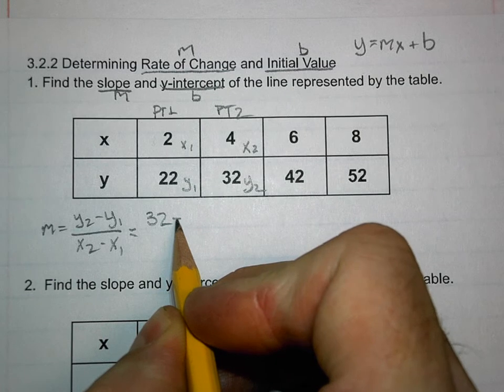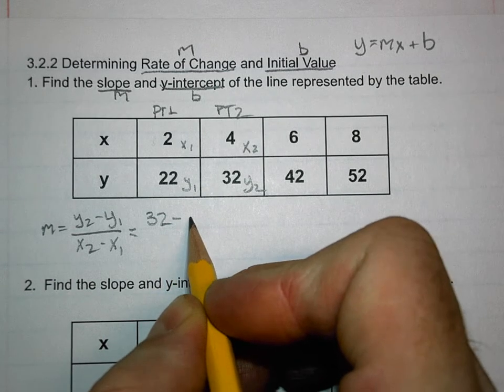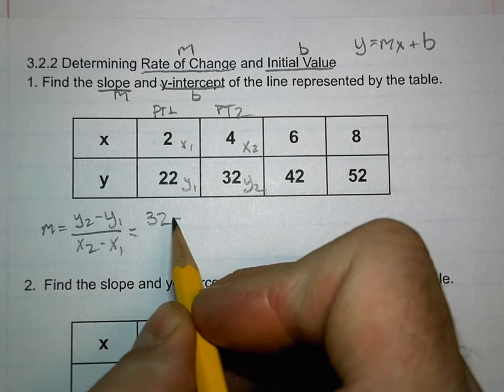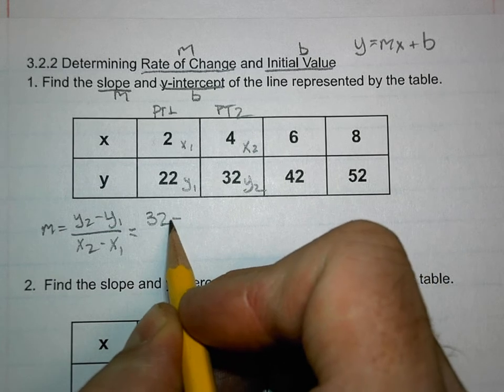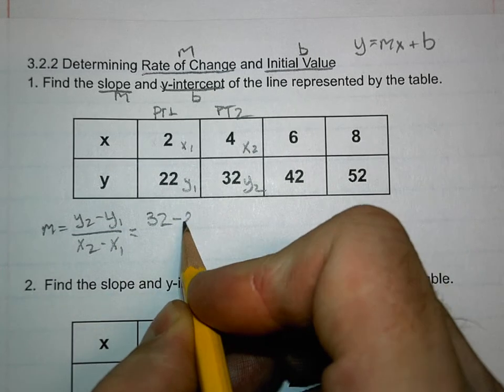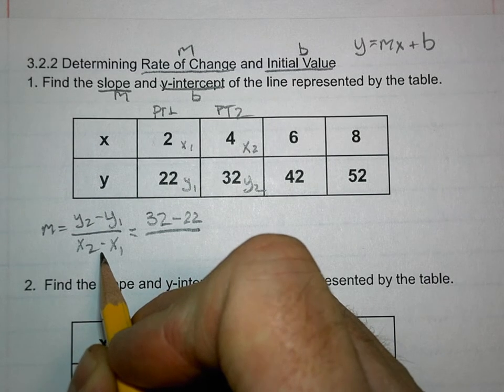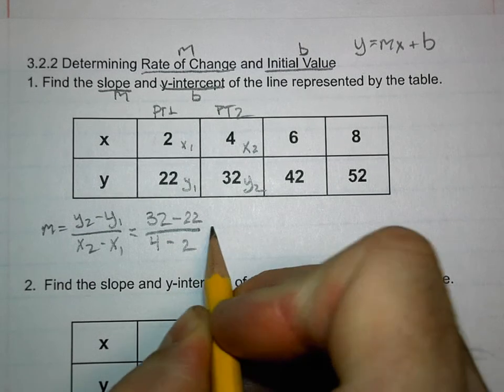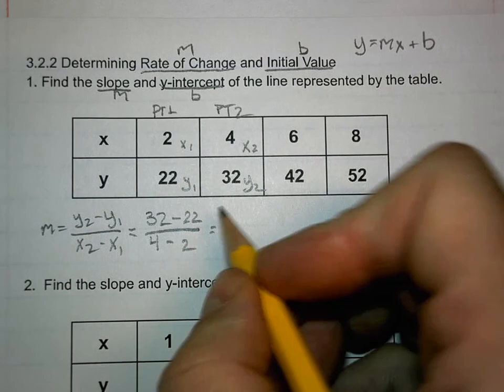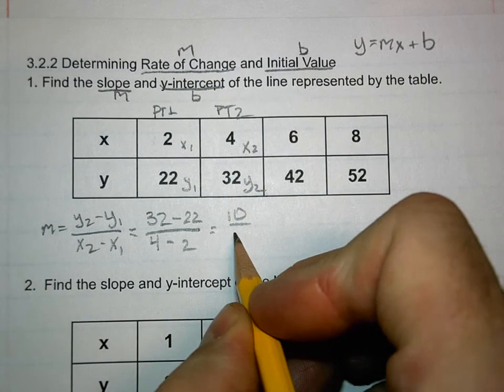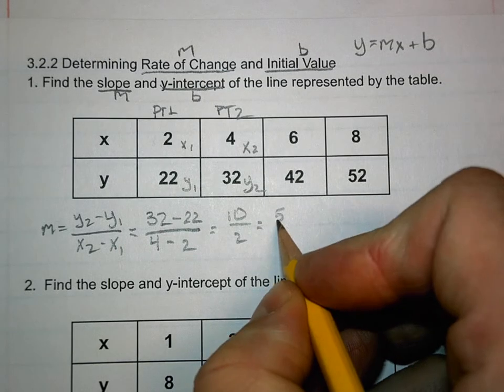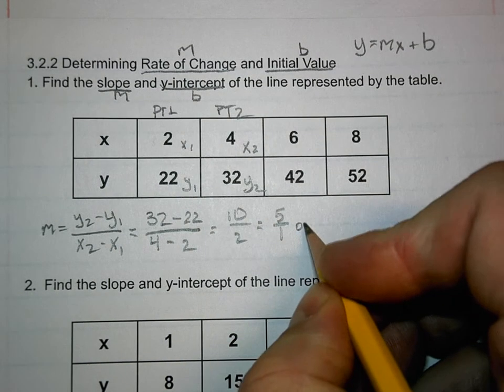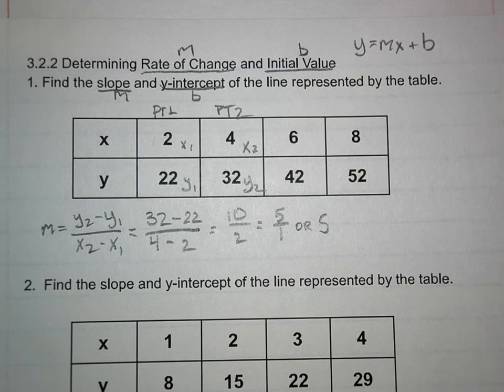Now all we've got to do is transfer that down below. So y2 is 32 minus, always put the minus there. This is what's going to get you in trouble - you're going to have a problem with a negative number and you're going to leave that minus off. Remember, two negatives get together and make a positive. So 32 minus y1, which is 22, over x2, which is 4, minus x1, which is 2. What's 32 minus 22? 10. What's 4 minus 2? 2. Can I simplify 10 over 2? What will it be? 5 over 1 or 5. Slope is one of those things you can leave in a fraction because it's rise over run.